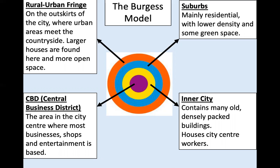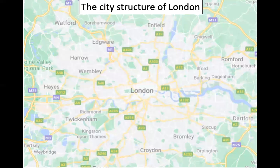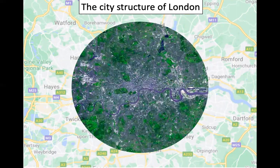But how does this relate to the structure of London? Here we have a map of London — the green areas on the outside are the countryside or the green belt, and the grey areas are the built up areas of London. We can add a satellite image and again we can see the green areas on the outside and the urban areas in grey towards the middle.